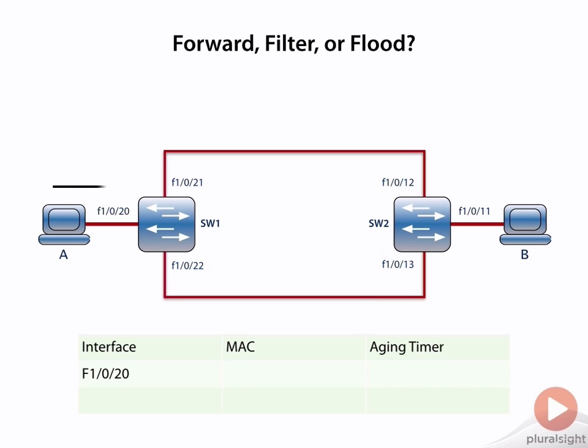Now notice what happened there. The MAC address of A, in this example A.A.A, is entered into the MAC address table, and an aging timer is associated with it. Now the reason that we associate it with an aging timer is because if we never hear from this MAC address again...